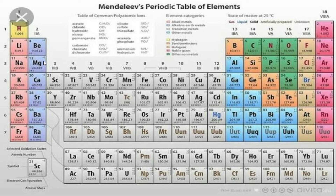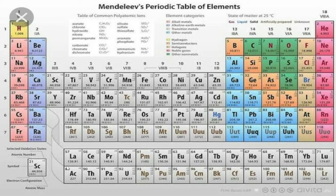Two groups belong to S-block elements, and the groups towards the right represent the P-block elements. Certain elements placed below the periodic table were later known as lanthanides and actinides.